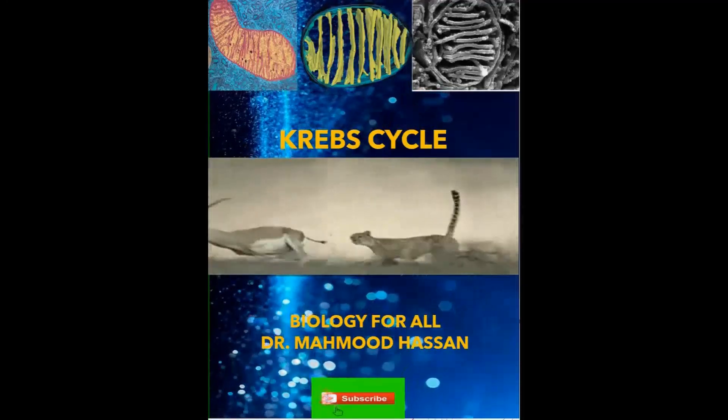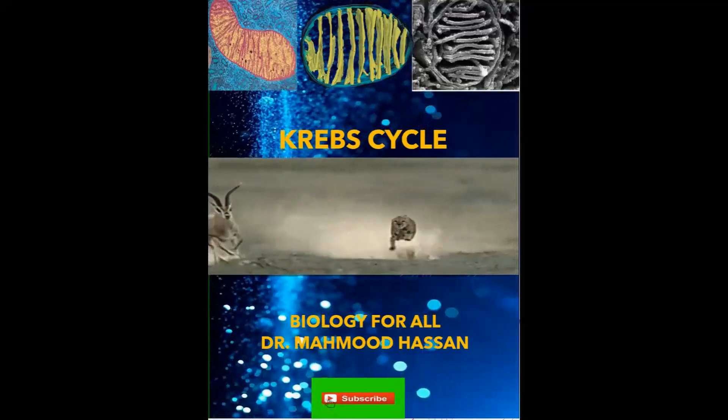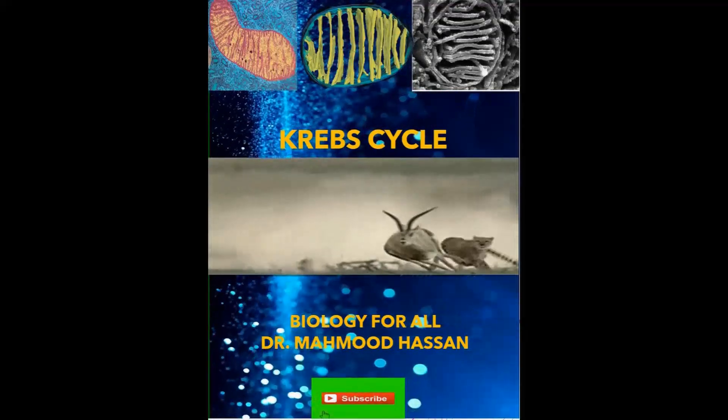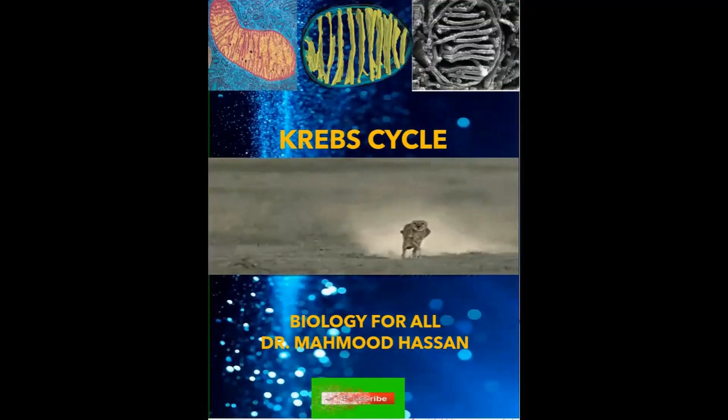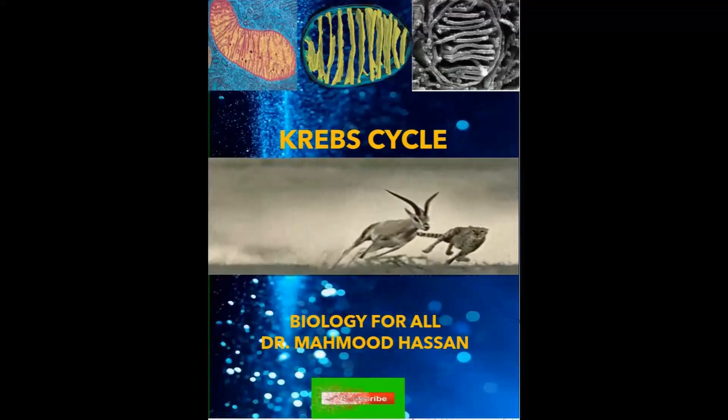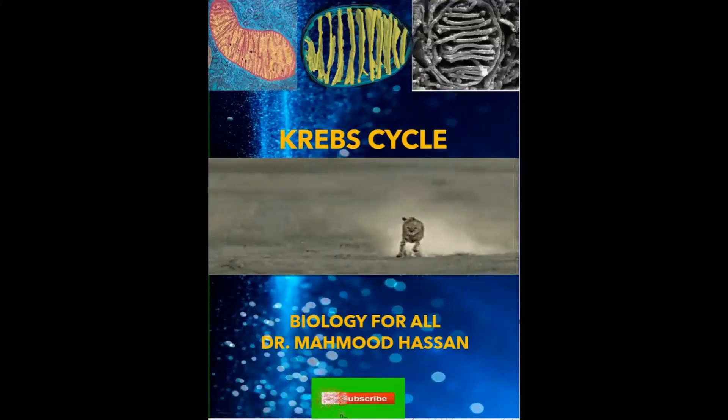Today we will continue with another process of respiration called Krebs cycle that was named after the scientist who discovered this chemical process in 1930. It is also called TCA or tricarboxylic acid cycle because most of the intermediates of this cycle have 3 carboxyl groups.